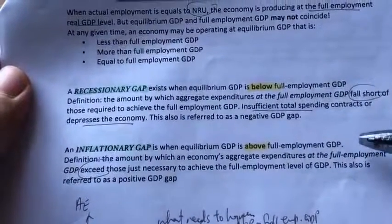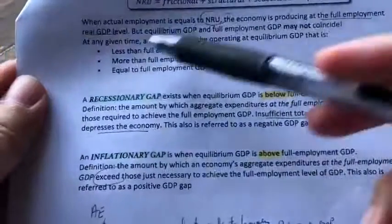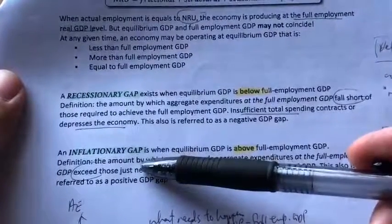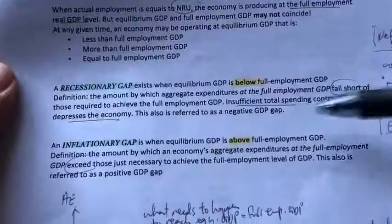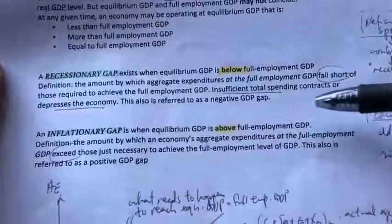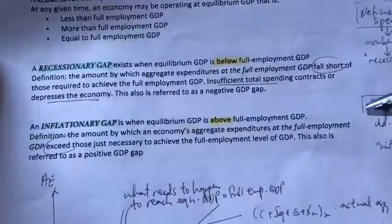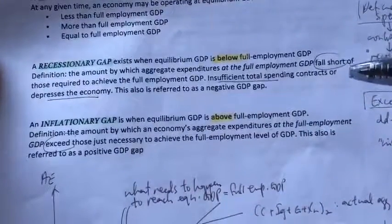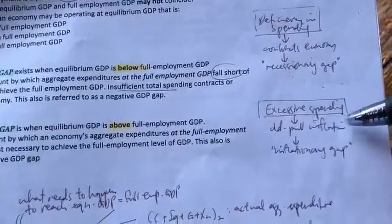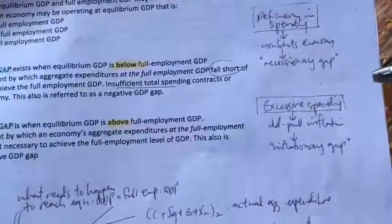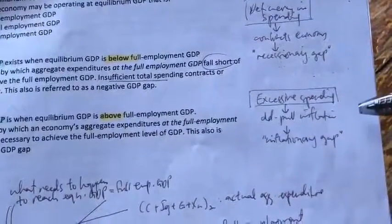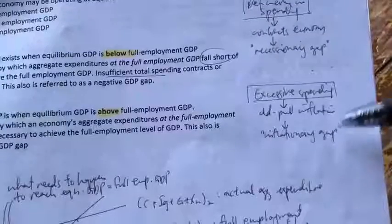The second case of disequilibrium is when equilibrium GDP is more than full employment GDP — a situation called the inflationary gap. An inflationary gap is the amount by which an economy's aggregate expenditures at the full employment GDP exceed those just necessary to achieve full employment GDP. There is simply too much spending happening in the economy. From topic four, we know that when there's excessive spending, there is demand-pull inflation, which is very much related to this inflationary gap.